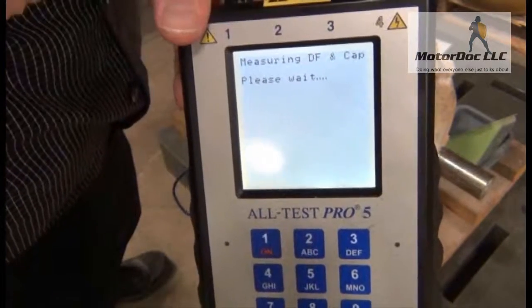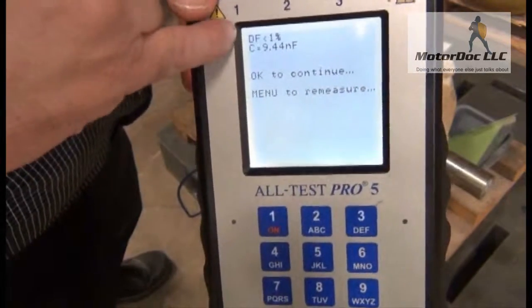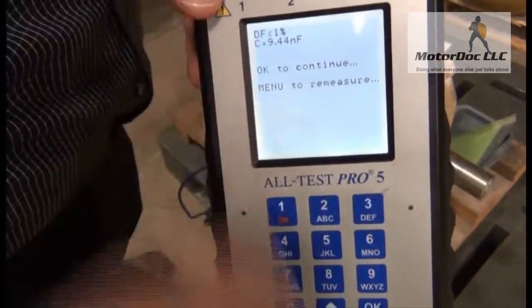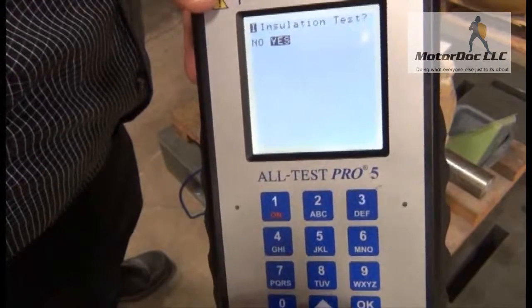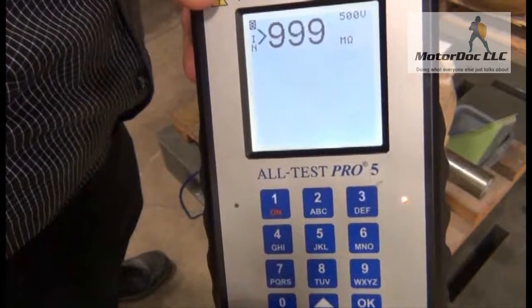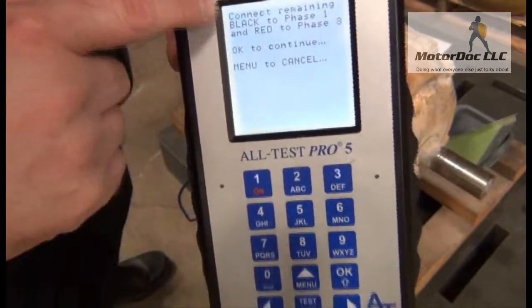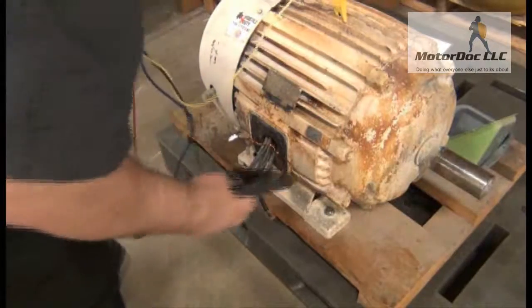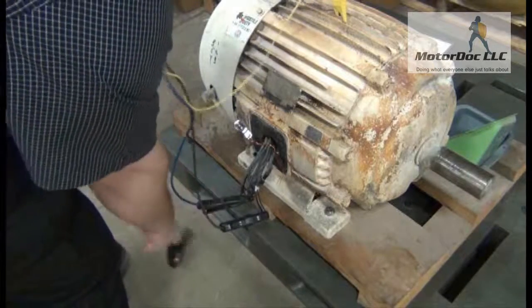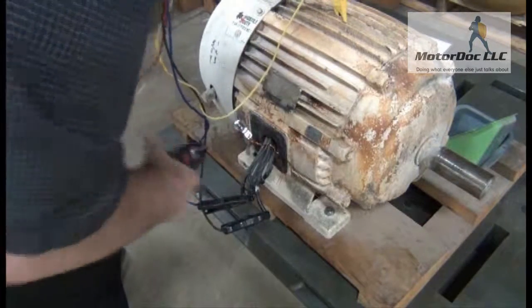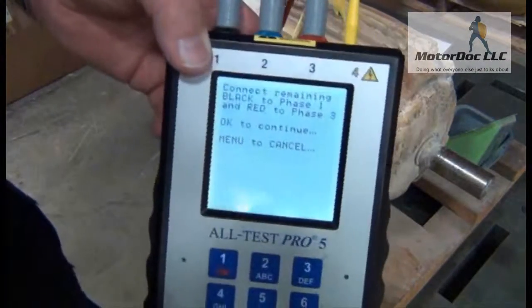It's doing my dissipation factor and capacitance. Once it's completed, you notice readings are the same. Press OK to continue. Now I do my insulation resistance test. Press OK. Press and hold. Press OK. Now I connect the other two leads. OK. We're all set up.